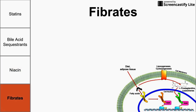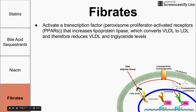The last hypolipidemic drug class worth mentioning is fibrates. Fibrates work by activating a transcription factor that increases the enzyme lipoprotein lipase. Lipoprotein lipase is an enzyme that converts VLDL to LDL, thereby reducing the amounts of VLDL and triglycerides. The large lipoproteins — VLDL (very low density lipoprotein) and chylomicrons — are primarily composed of triglycerides. Therefore, if you reduce VLDL by activating more lipoprotein lipase, you reduce VLDL and plasma triglyceride levels.